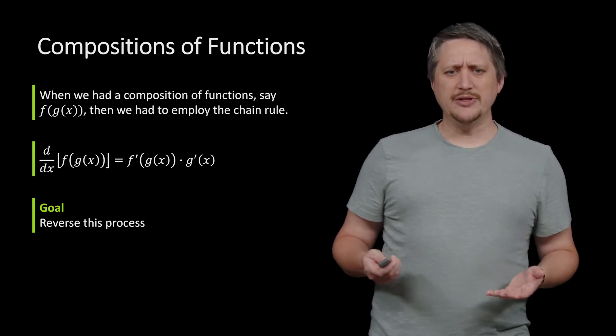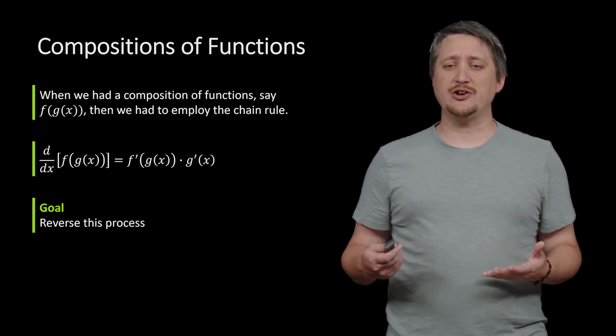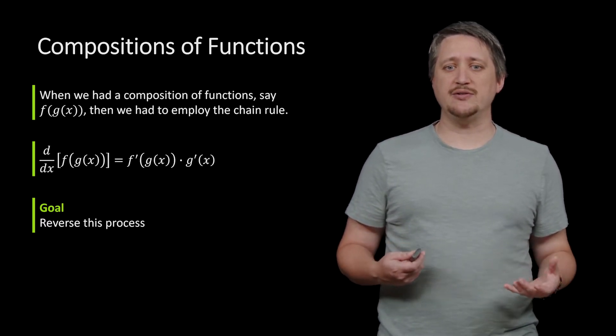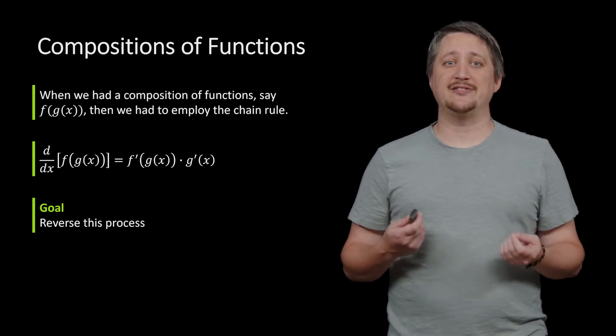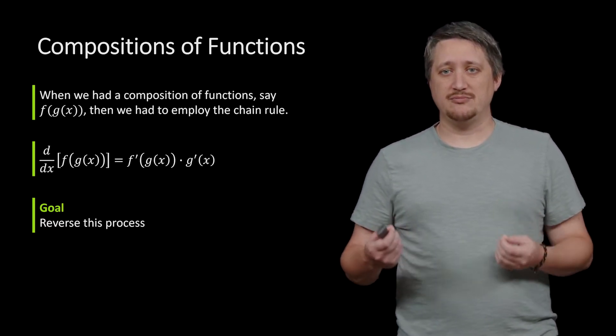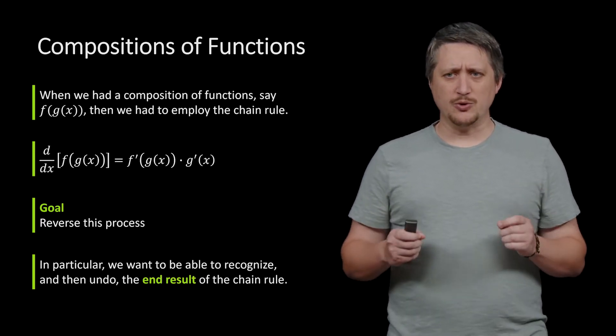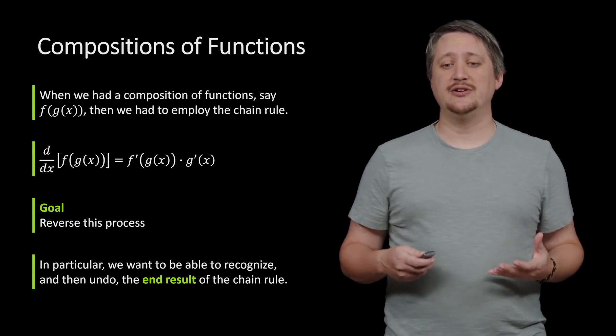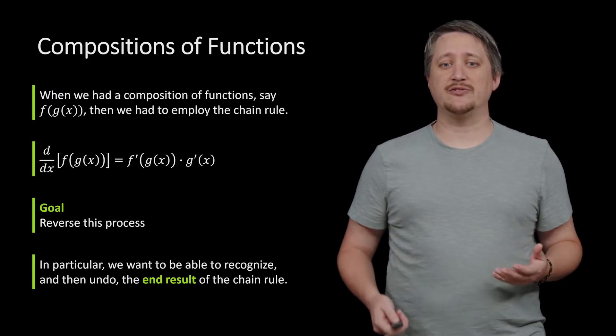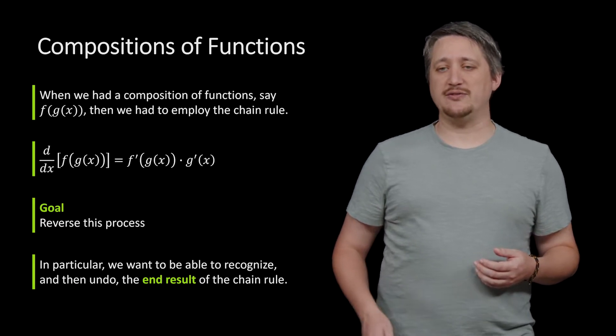So our goal then is to reverse this process. The idea here with integration is always trying to reverse the derivative, and so we want to figure out how we can recognize this composition and sort of back trace it. Our goal is to recognize and then undo this end result of the chain rule, going from something that looks like the right-hand side and try to bring it back to this f of g of x.